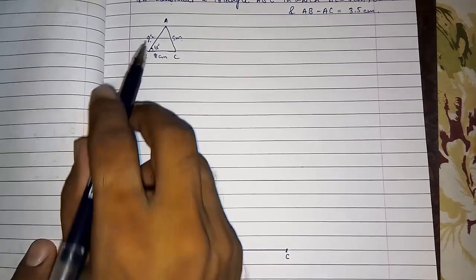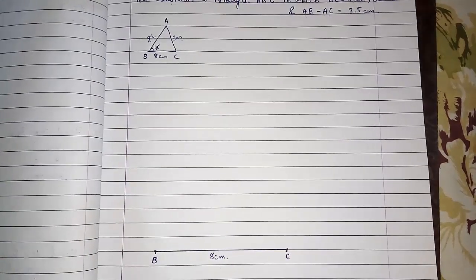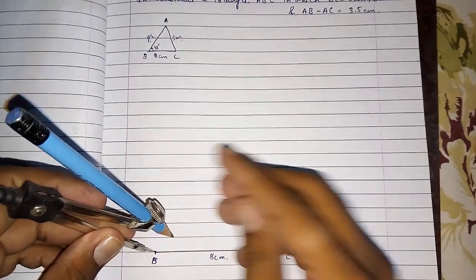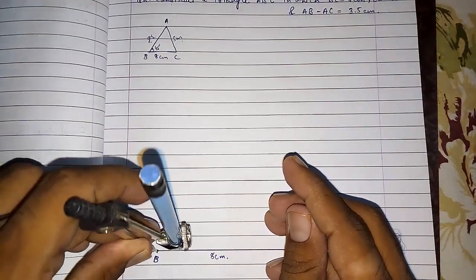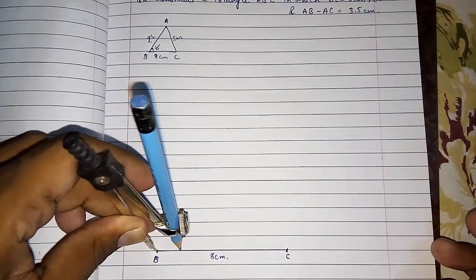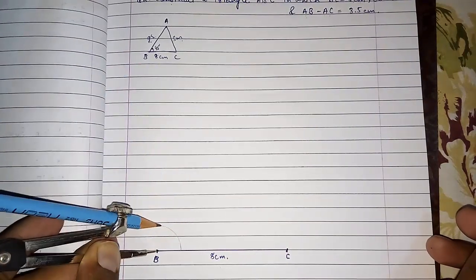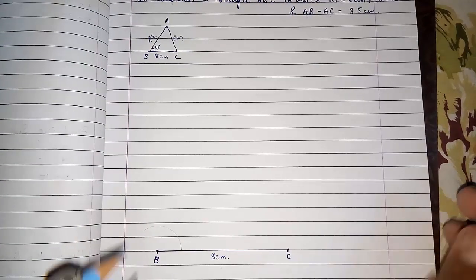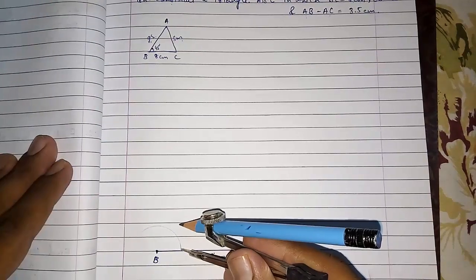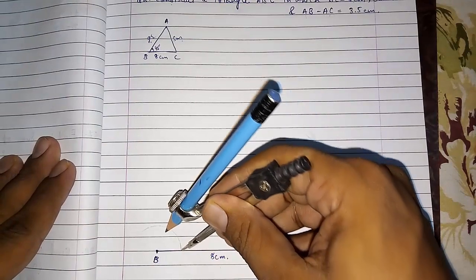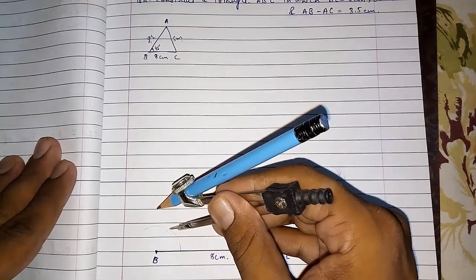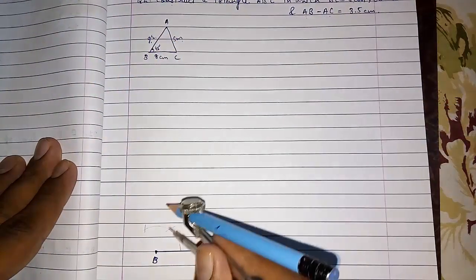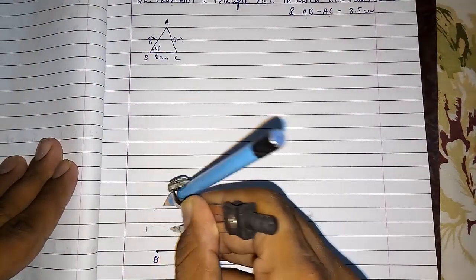Now they told you to construct angle B 45 degrees, so what we are going to do is prepare a 90 degree. I am going to make this arc, and from this you will get a 60 degree arc here. This will be 60 degrees and this will be 120 degrees.